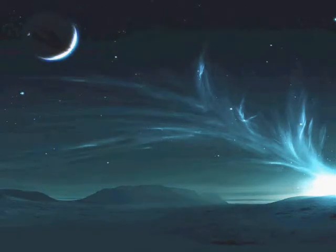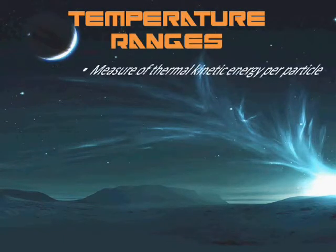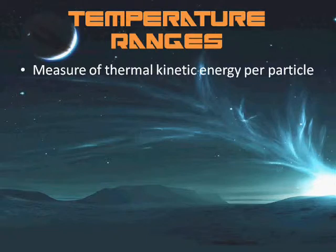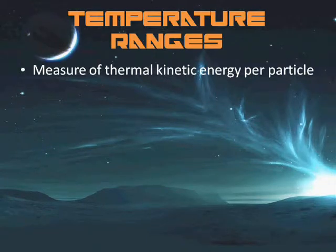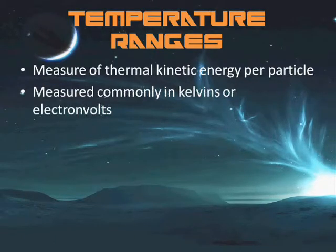Plasma temperature is a measure of the thermal kinetic energy per particle. Very high temperatures are usually needed to sustain ionization, which is a defining feature of a plasma. The degree of ionization is determined by the electron temperature relative to the ionization energy. At low temperatures, ions and electrons recombine into bound states and the plasma eventually becomes a gas. Plasma temperature is commonly measured in kelvins or electron volts.